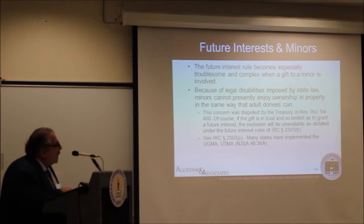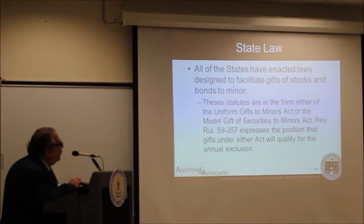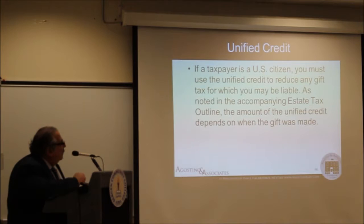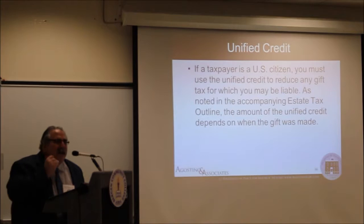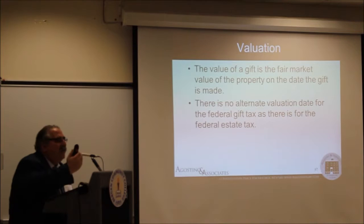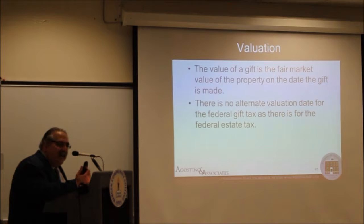For gifts to minors, you use the Uniform Gift to Minors Act, which all states have available. The unified credit must be used against all gifts — it's mandatory. You can't say you want to save your unified credit and pay gift tax now. The unified credit gets used first. The value of gifts is determined by fair market value on the date of the gift, and you'll usually have an appraisal using the principles in Revenue Ruling 59-60.